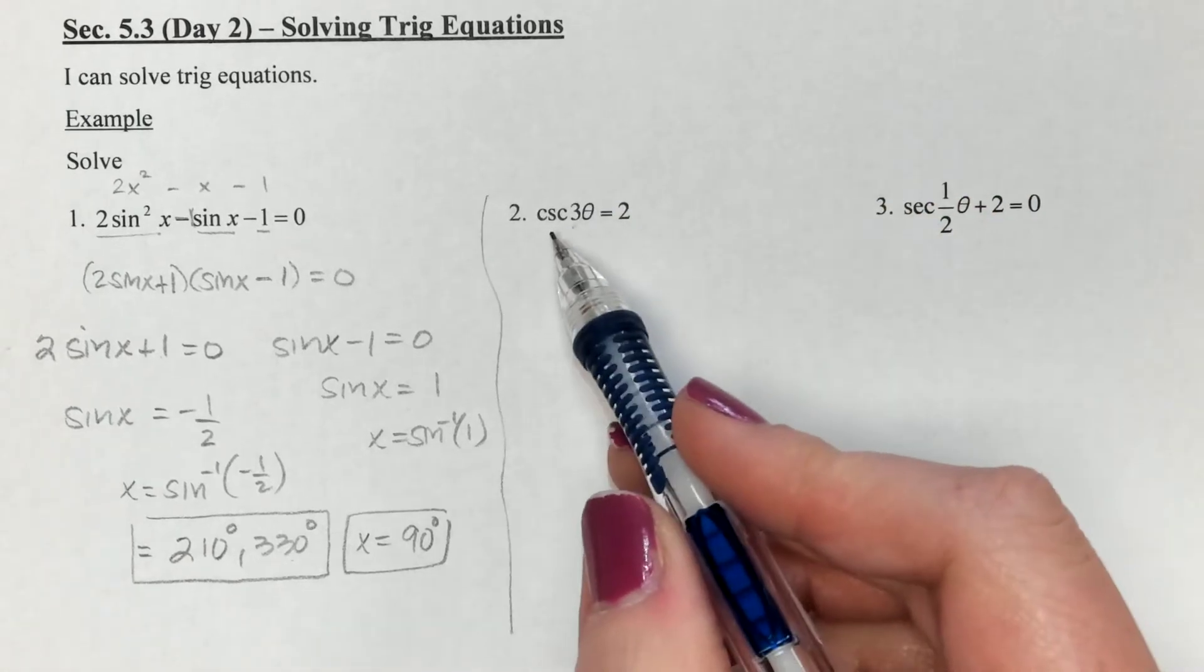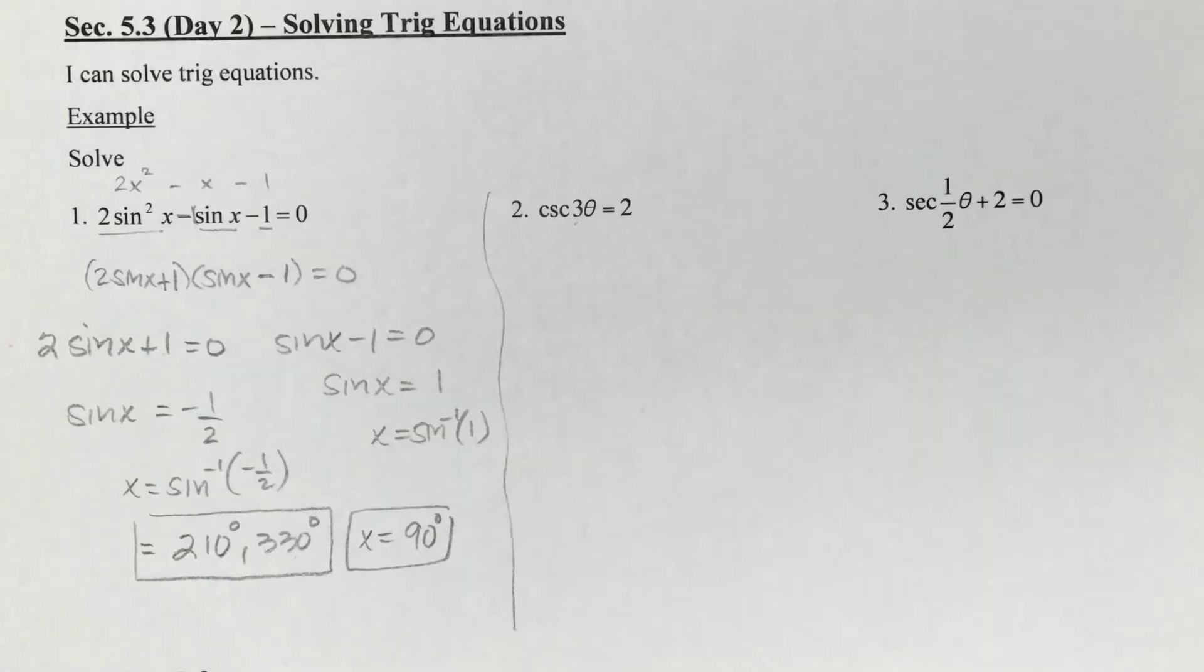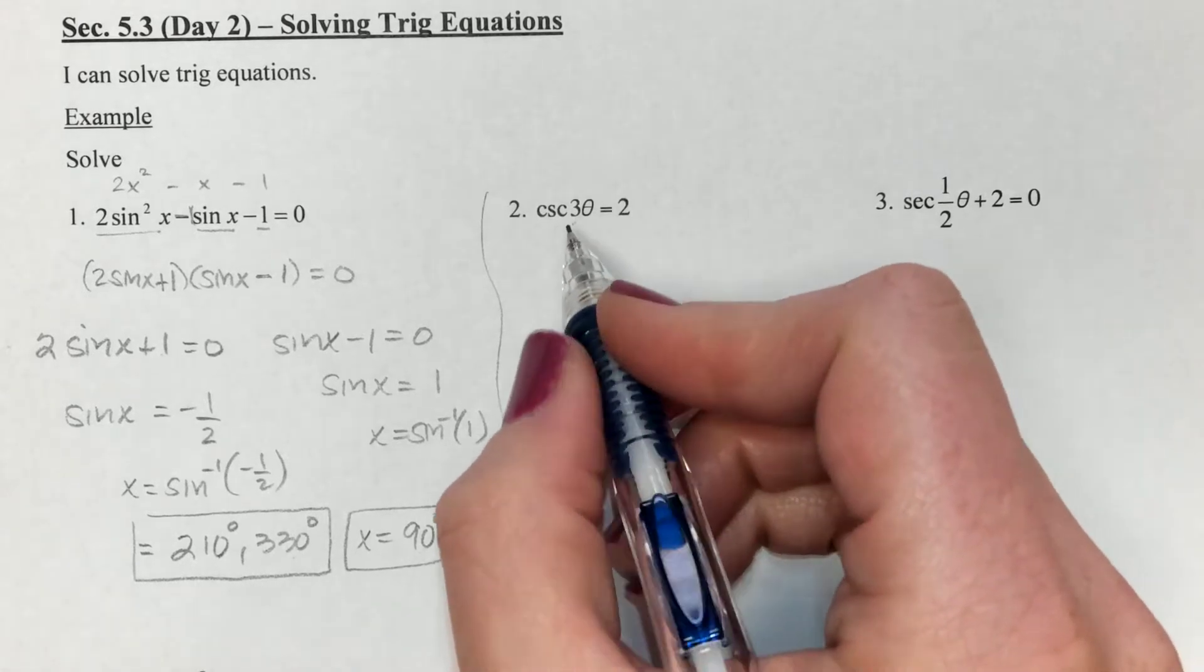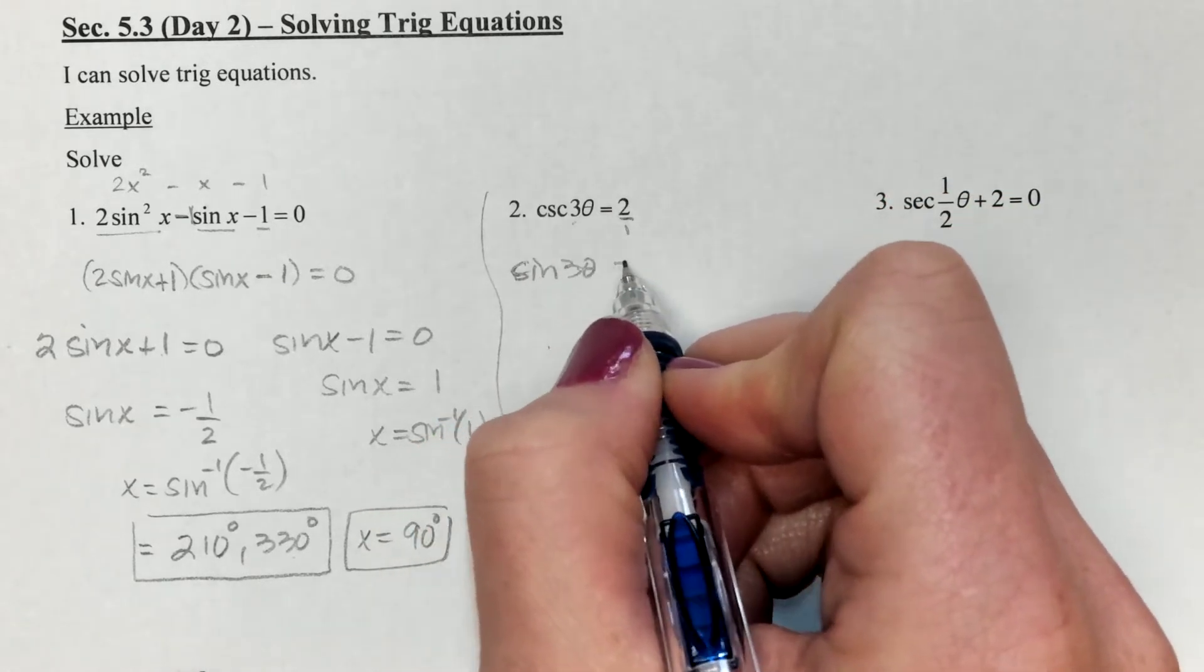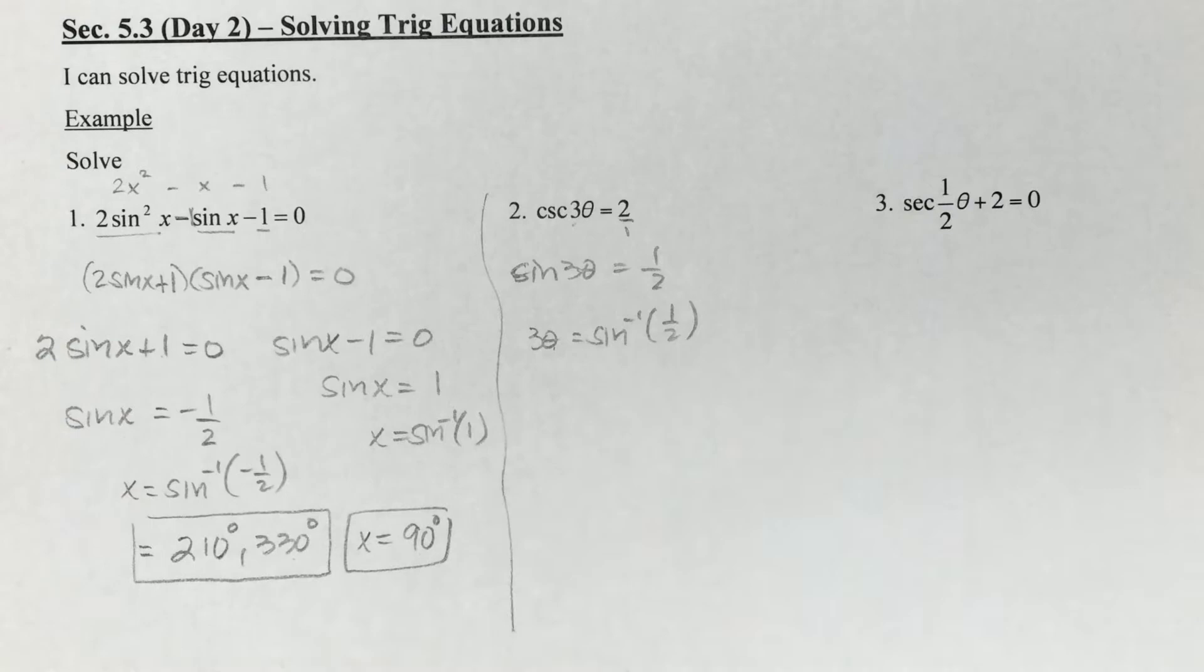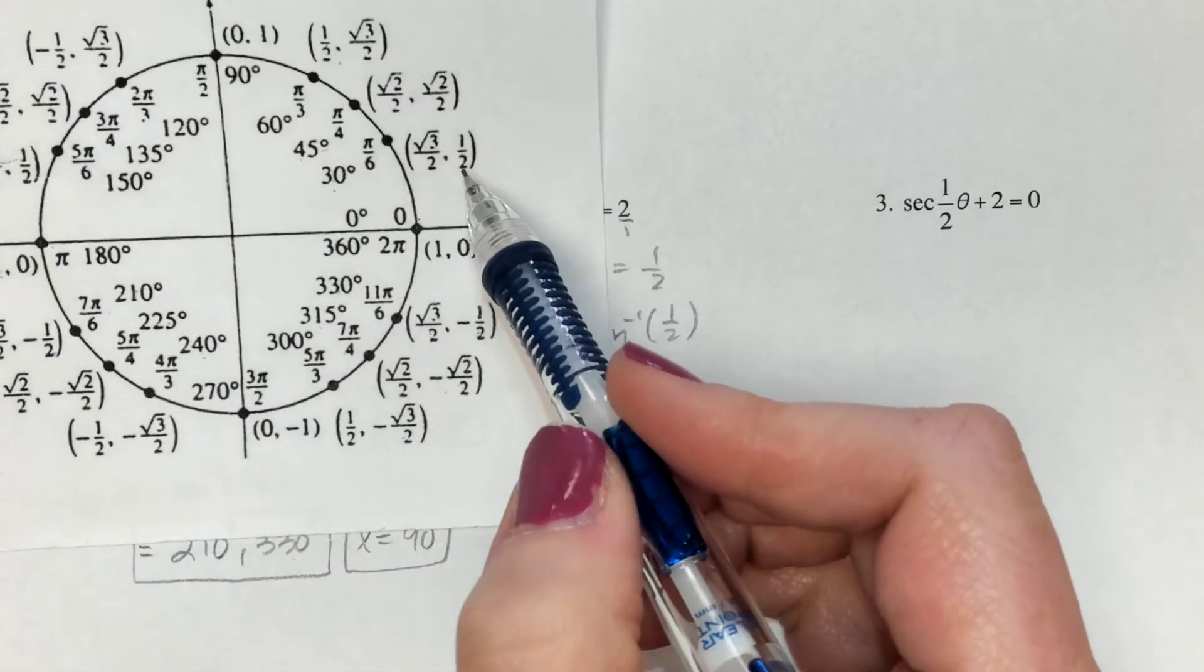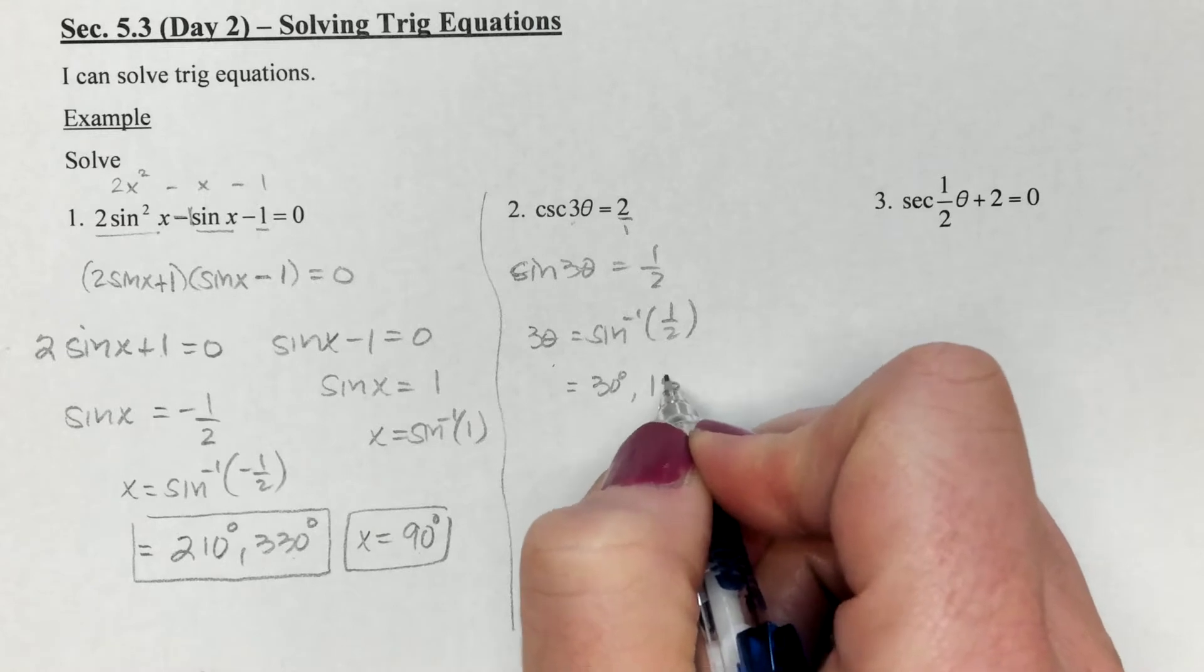Next up, we've got cosecant of 3θ equals 2. We don't have any cosecants on our circle, but cosecant goes with sine. If we figure out the sine value, we can use the reciprocal of that. I'm going to flip right away. This 2 over 1 is really going to become sine, is really going to become one half. So I'm looking for all the angles that have a sine of one half, which we kind of did in the last one, only we were doing negative half. Positive half is 30 and 150.